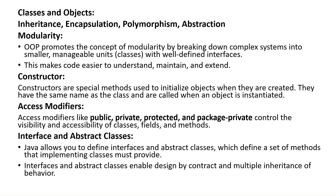The next term is constructor. Constructors are special methods used to initialize an object when it is created. They have the same name as the class and are called when an object is instantiated. Next is access modifiers. Access modifiers are public, private, protected, and package-private or default. They control the visibility and accessibility of a class, field, and method.